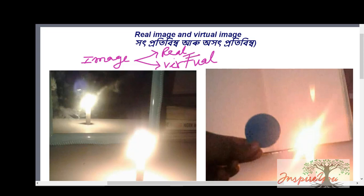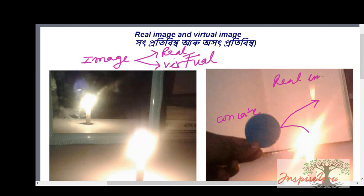This is a concave mirror. This is a real image. A real image can be obtained on a screen. For example, in a cinema, the image is projected on a screen — that is a real image.